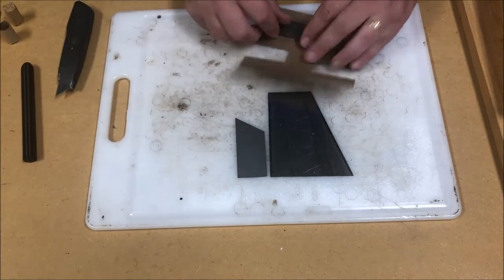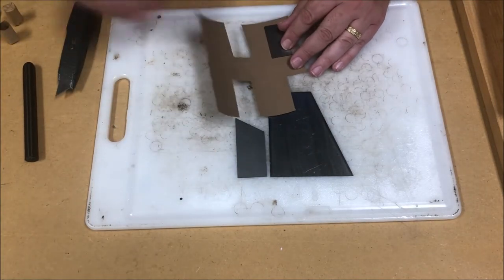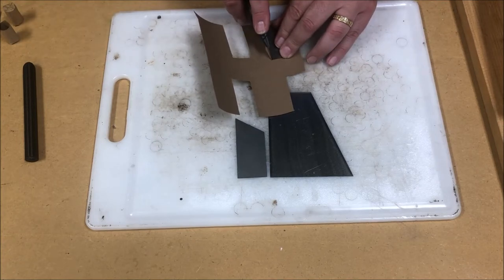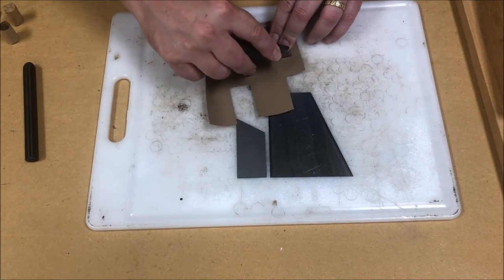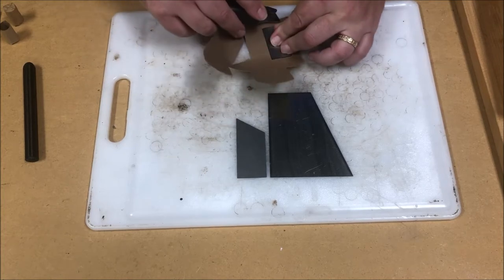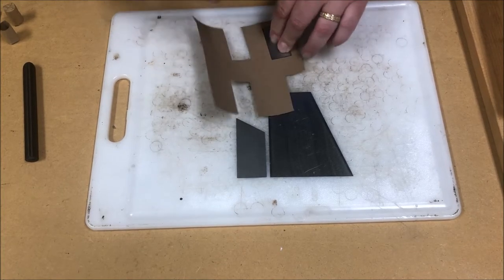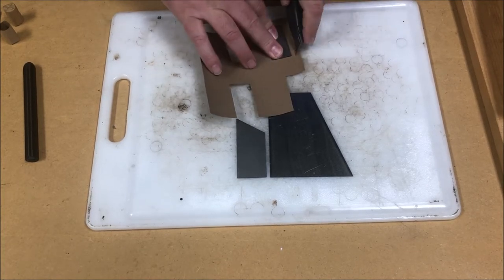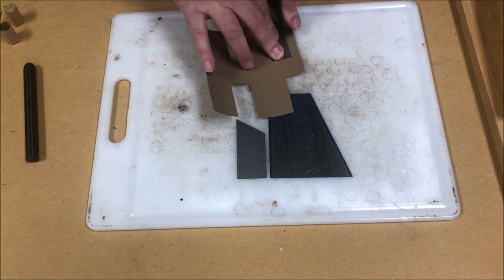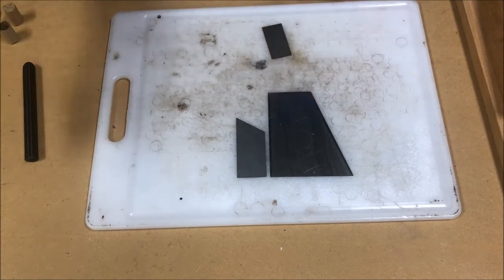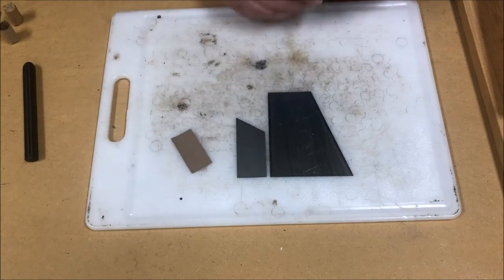So to get started, take a template, and this is the stiffener template for the powder chamber, and use a razor knife, and keeping your fingers out of the way, cut out a piece of paper. There's the stiffener.